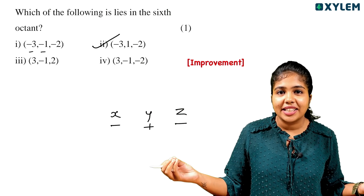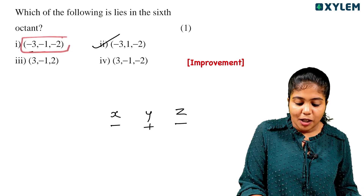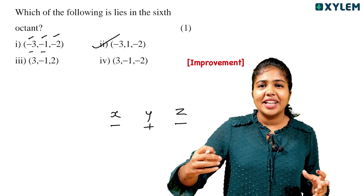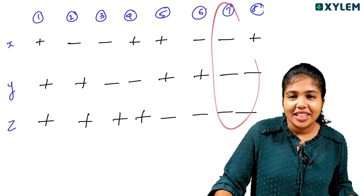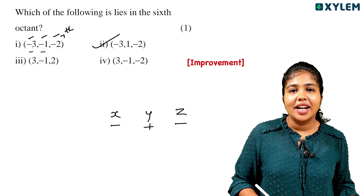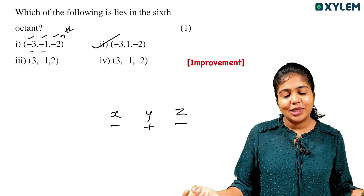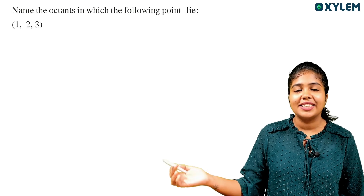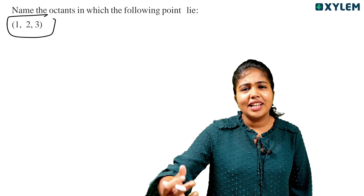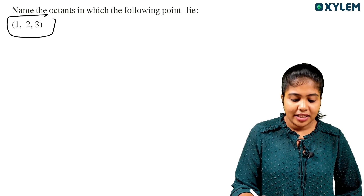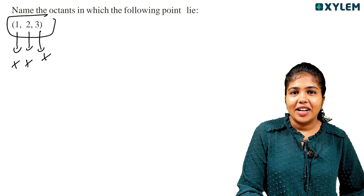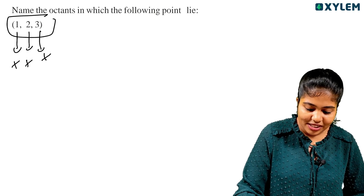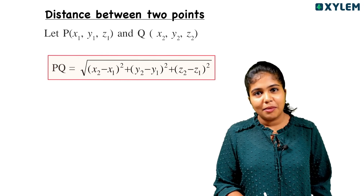We can answer one more question easily. X negative, Y negative, Z negative — all three coordinates negative — that is the seventh octant. Now let's look at another question: name the octant in which the following point lies. X positive, Y positive, Z positive — all three positive — that is the first octant.